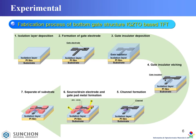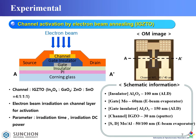This is the fabrication process of a bottom-gate structure IGZTO-based TFT for channel activation by E-beam irradiation. This work is about thin film transistor channel activation by electron beam irradiation. The channel material is indium oxide, gallium oxide, tin oxide, and zinc oxide. After device fabrication, we carry out electron beam irradiation on the channel layer.